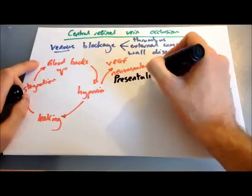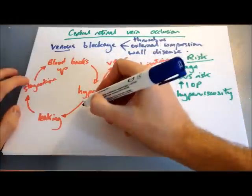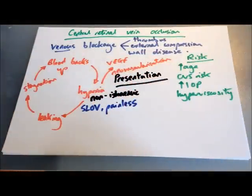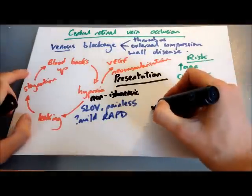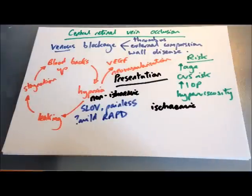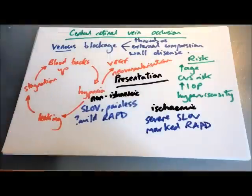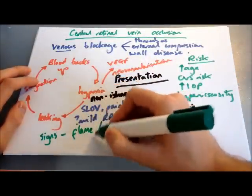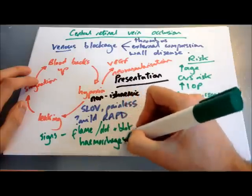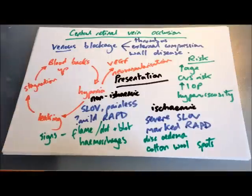The presentation differs depending on whether the retinal vein occlusion has caused ischaemia or not. In non-ischaemic retinal vein occlusion, you get sudden unilateral painless loss of vision or blurred vision, and you might have a mild relative afferent pupillary defect. In contrast, ischaemic central retinal vein occlusion presents with severe sudden loss of vision and a marked relative afferent pupillary defect. The signs are similar for both — you get flame haemorrhages and dot and blot haemorrhages (bleeds into different layers of the retina). You get mild disc oedema in non-ischaemic, but much more marked in ischaemic. And with the ischaemia in ischaemic CRVO, you get cotton wool spots.